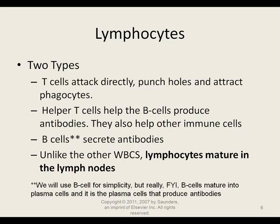Lymphocytes are born in the bone marrow and actually mature in the lymphatic system. There are two types you need to know: T cells and B cells — two types of lymphocytes involved in specific defense, or the third line of defense. T cells attack directly, and helper T cells also help B cells produce antibodies and help other immune cells as well. B cells secrete antibodies.